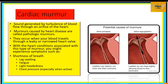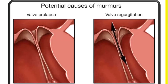Another condition is cardiac murmur, which is a normal thing in individuals, particularly in the newborn. It is a sound generated by turbulence of blood as it passes through an orifice of the heart. Murmurs caused by heart disease are called pathological murmurs, occurring when blood travels through a leaky or narrowed heart valve — such as valve prolapse leading to valve regurgitation. Symptoms can include leg swelling, fatigue, lightheadedness, or chest pressure, particularly when the individual is active.